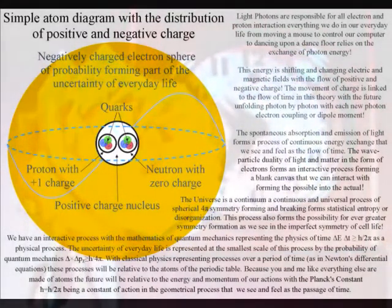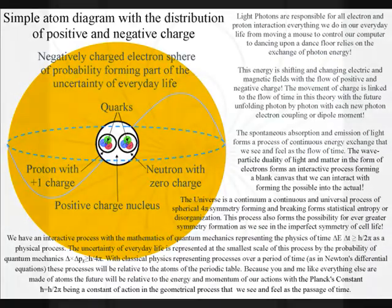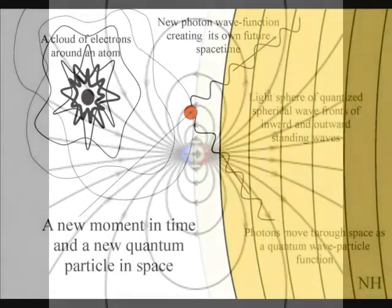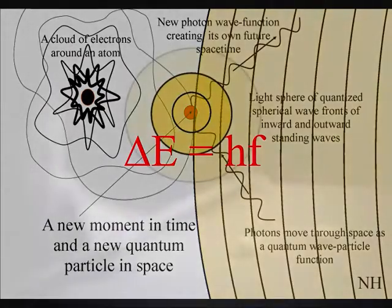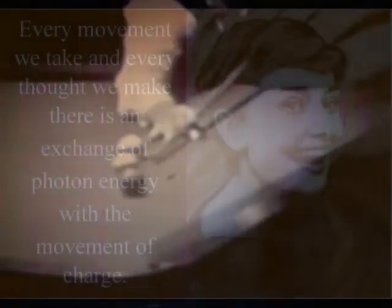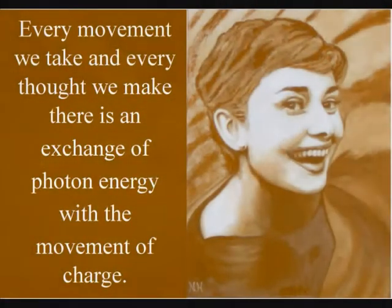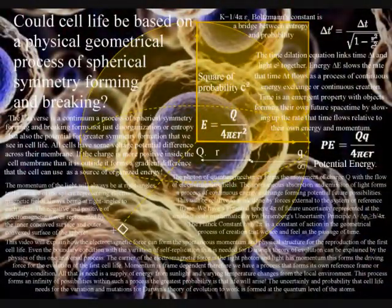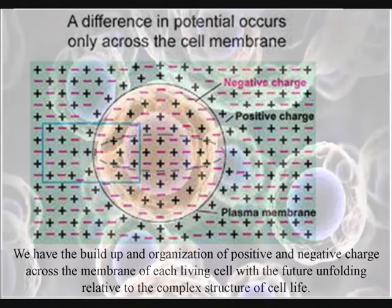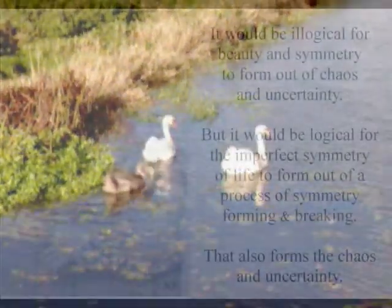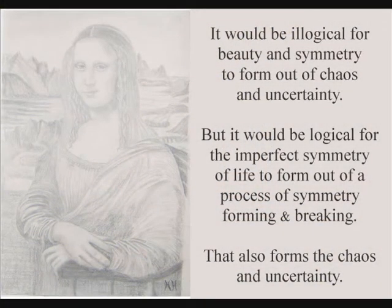The atoms are continuously interacting with the electromagnetic spectrum — what we commonly call light — with the exchange of photon energy forming the movement of positive and negative charge. When objects in our everyday life touch and interact, it is electrical charge that comes in contact. Every movement we take and every thought we make, there is an exchange of photon energy with the movement of charge. This process is relative to every living cell in our body, with the build-up and organization of positive and negative charge across the membrane of each cell. In this way, cell life creates its own ripples in the fabric of space-time, forming its own evolutionary path relative to the energy and momentum of its own actions.